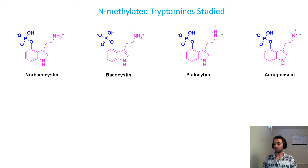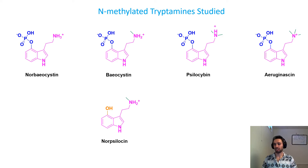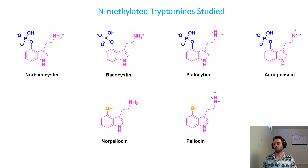Then we have aerogenesinin, which has three methyl groups substituted for each of the hydrogens to give us the trimethyl substituted derivative. Then we have norsilocin, which has the alcohol group — what your body actually converts the phosphate group to in order to make the compound psychoactive and cross the blood-brain barrier — with one methyl group substitution at the nitrogen position. As we go from left to right, we have an increasing degree of methylation.